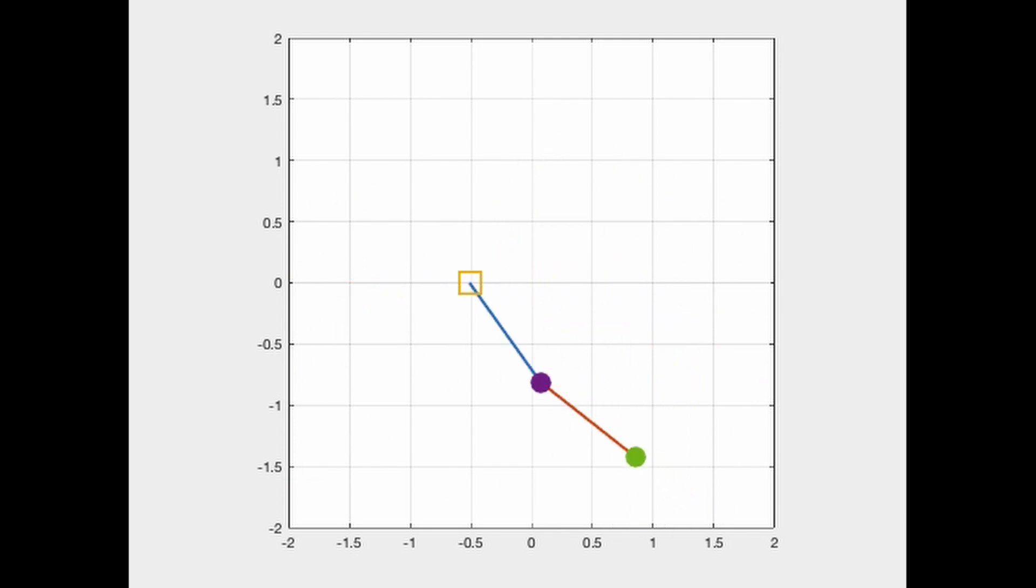One way to simulate the butterfly effect is to set up a double pendulum, and if you tweak it like I've done to this one, you can make it into a musical instrument. Here's what that sounds like.